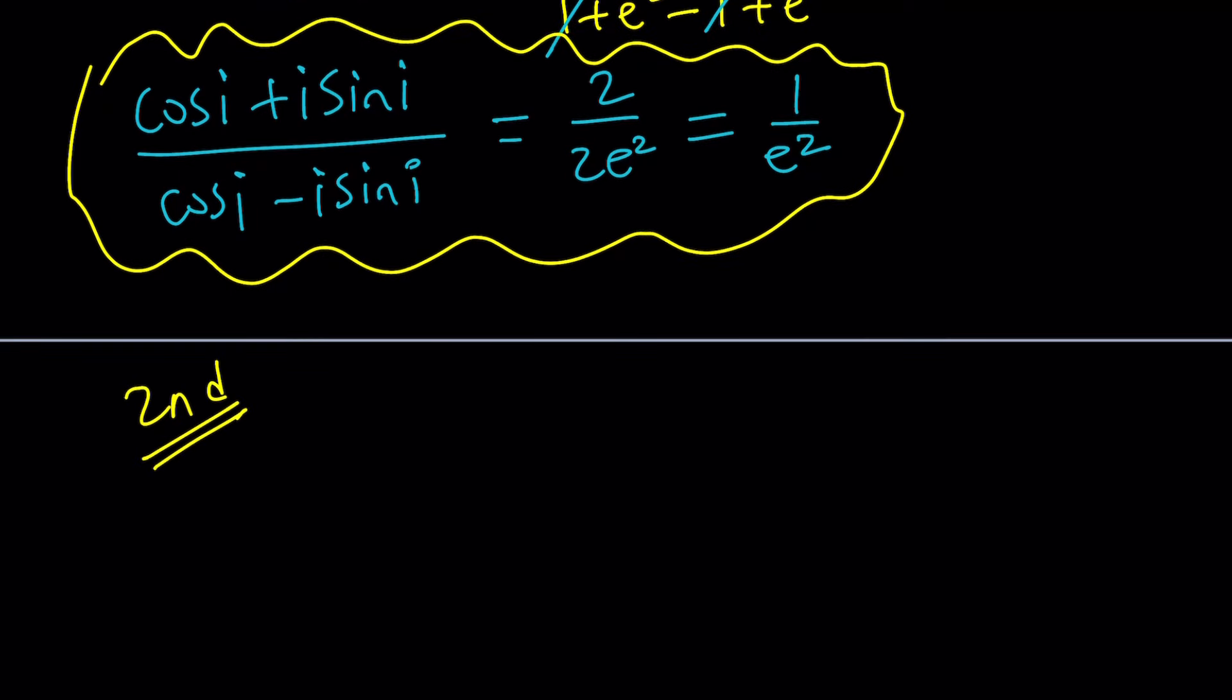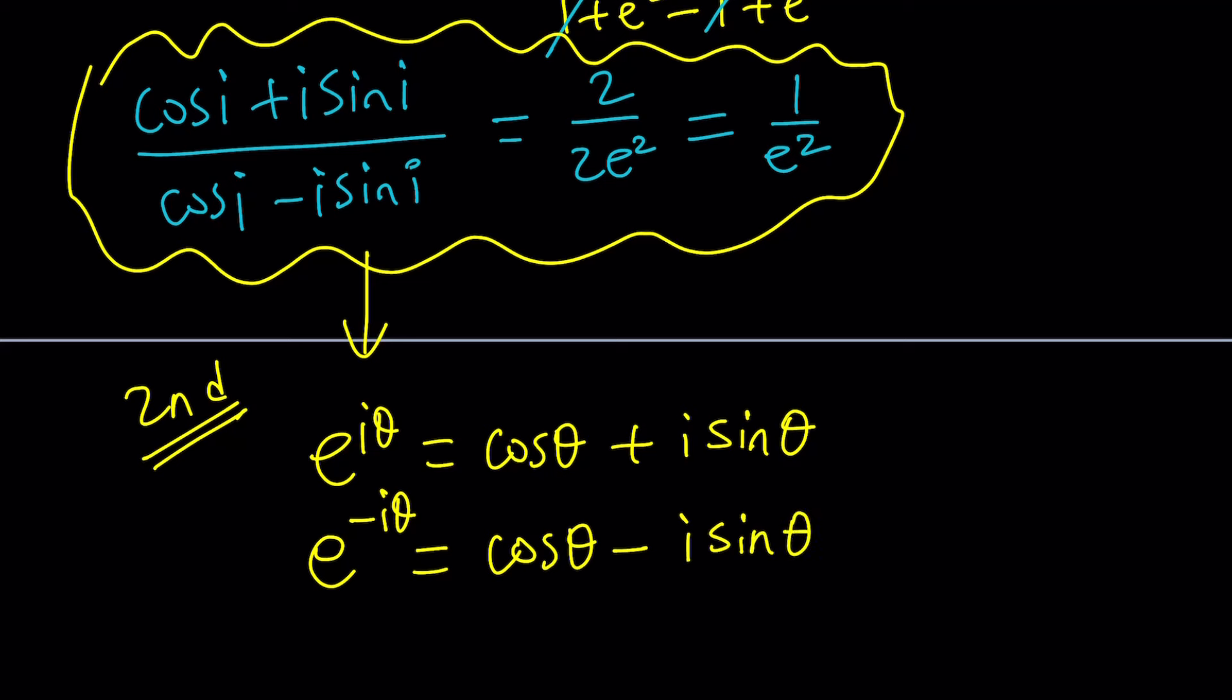So we're supposed to evaluate this expression. Notice that the first method actually comes from Euler's formula, which is e to the i theta equals cosine theta plus i sine theta. Now we can definitely go ahead and use this. But how do you get cosine theta minus i sine theta? Well, you can basically just replace theta with negative theta. And cosine is an even function, so it's just going to absorb the negative. And sine cannot absorb. It's going to have to spit it out. Cool.